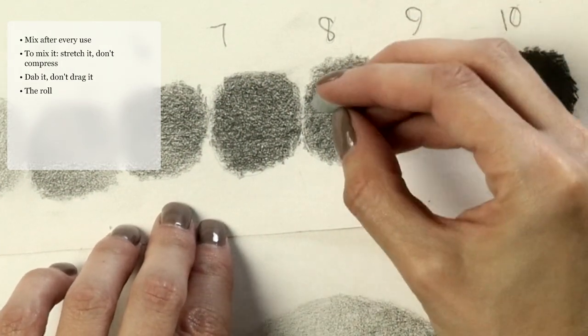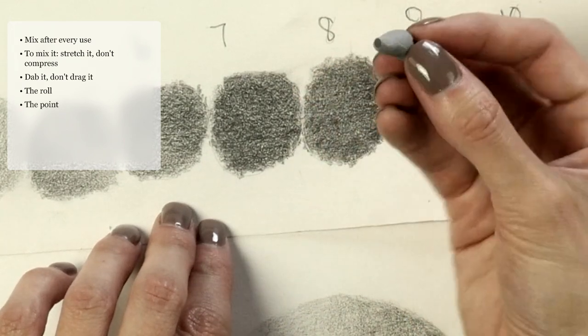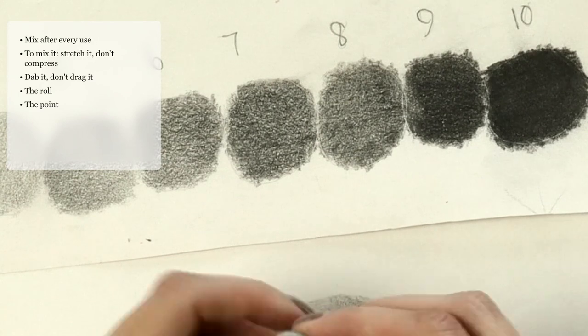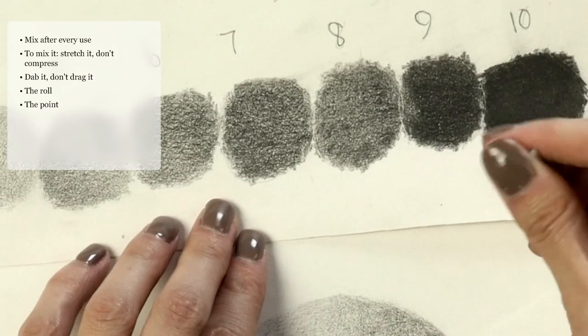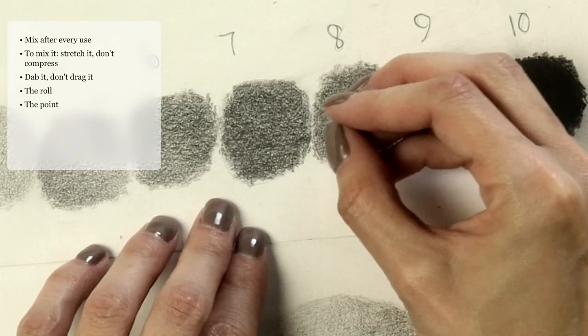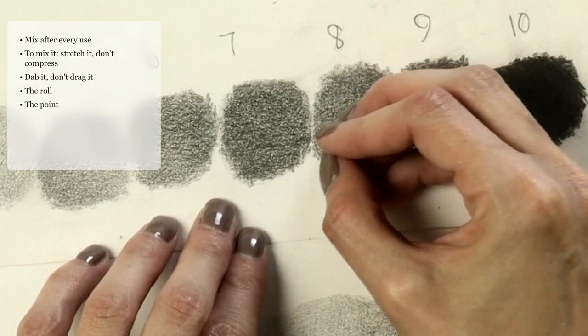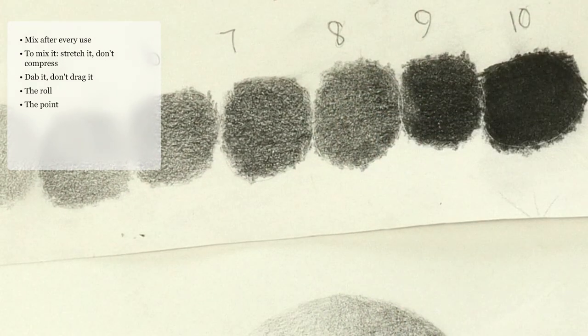Another way you can use it is what I call making a point. I've formed a small piece of the kneaded eraser into a point, and I can dab that onto the page and lift some value off. I usually only dab it once or twice, maybe three or four times.